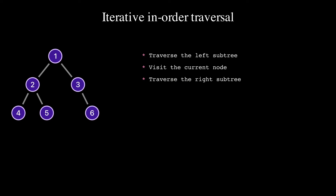Let's do in-order traversal for this binary tree. We start from the root node. Since the left subtree of the root was not visited, we go to node 2. The left child of node 2 was not visited, we go to node 4. Node 4 doesn't have a left child, so we print 4 to the output. Node 4 doesn't have a right child.